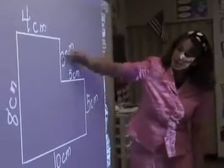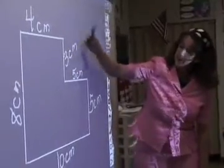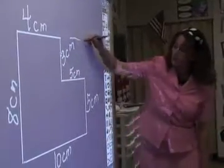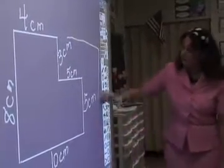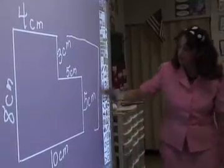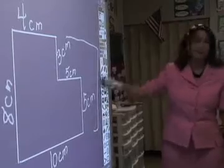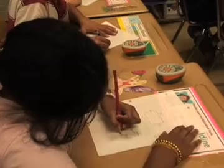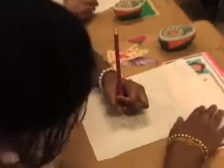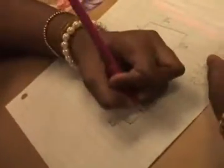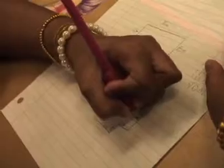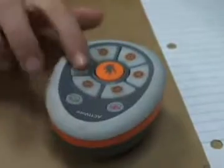As I model the first perimeter problem out on the board, the students are working it out at their desks. I then use the active votes to informally assess whether the students got the problem right or not.